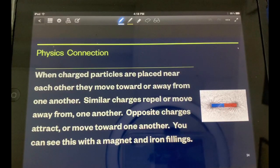Physics connection. When charged particles are placed near each other they move toward or away from one another. Similar charges repel or move away from one another. Opposite charges attract or move towards one another. You can see this with a magnet and iron filings.